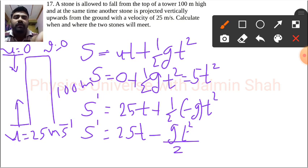Now what happens: whatever this dropping stone covers and that throwing stone covers, when they meet, they cover exactly the same distance, which is S plus S dash will be 100 meters, that is the exact height of that tower.